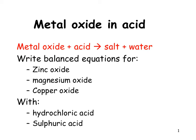Next general reaction we need to look at is a metal oxide and an acid. Whenever a metal oxide, so let's take an example, let's go with magnesium oxide, reacts with an acid and let's use hydrochloric acid.